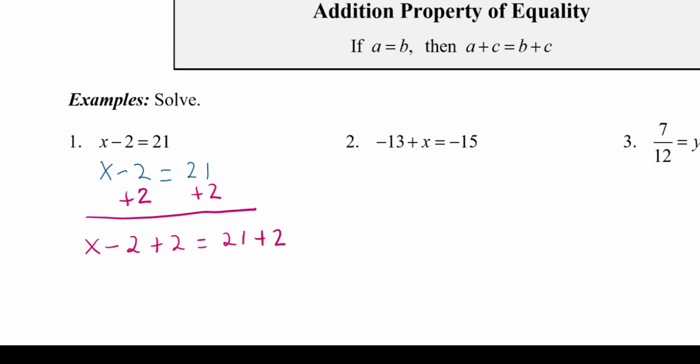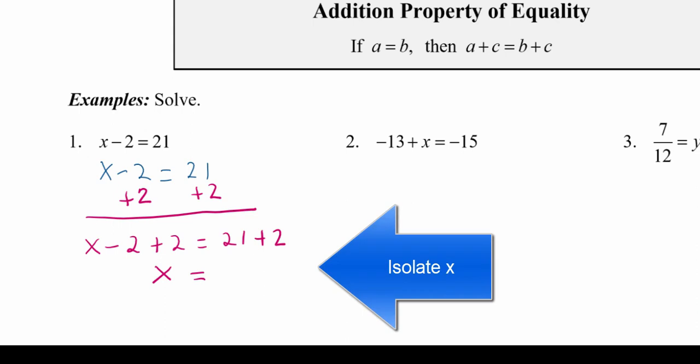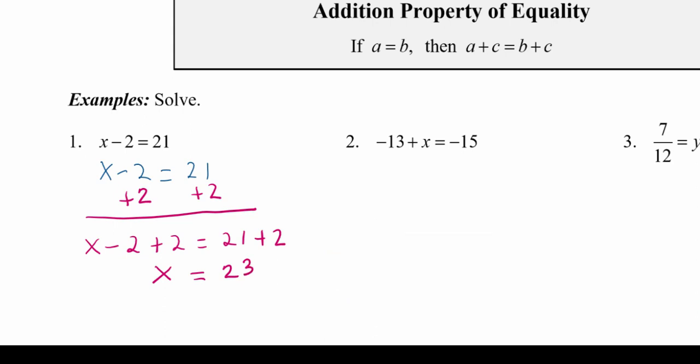The negative 2 and positive 2 on the left side give us zero, leaving x by itself — that's what we call isolating the variable. On the right side we have 23, which is the answer we expected: 23 minus 2 equals 21. So we've solved for x. We isolate the variable by using the addition property of equality, adding the same number to both sides.